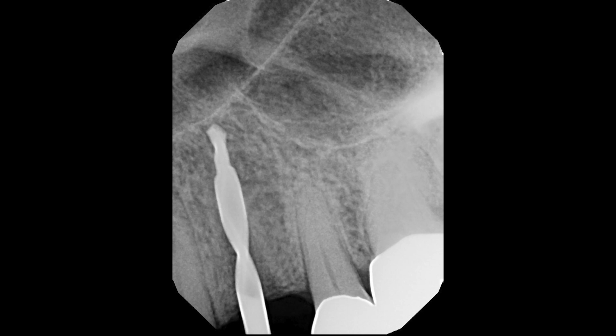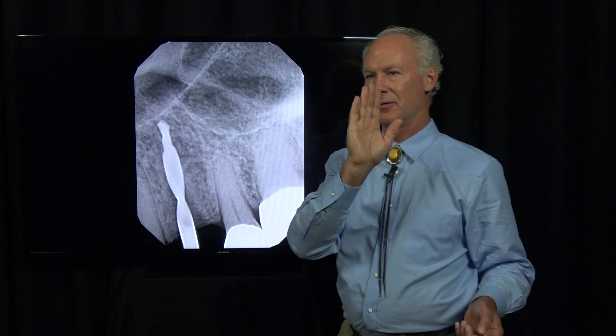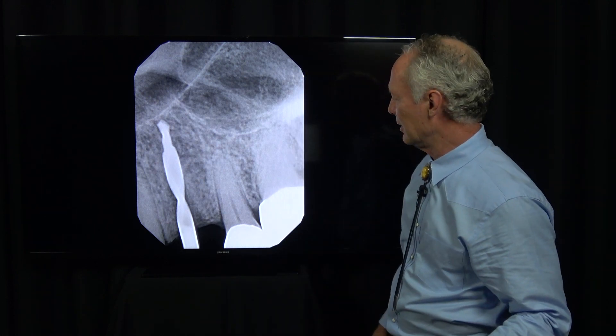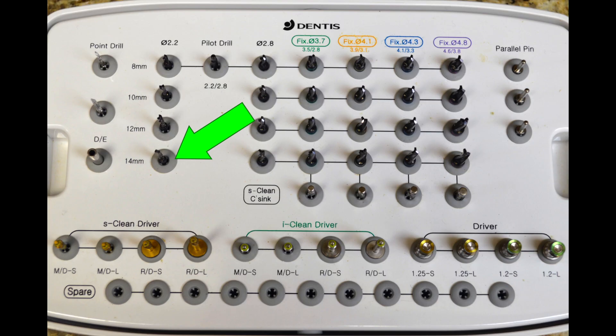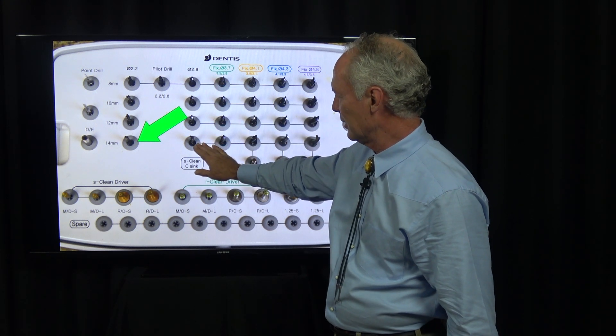The longest root-form implant I'm using is 14mm, so that's plenty of depth. It's lined up perfectly along the long axis of the adjacent teeth. I take a radiograph and see it's ideal—right in the middle. I check it from the facial and buccal to ensure proper alignment.